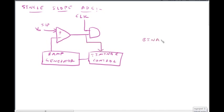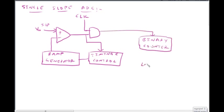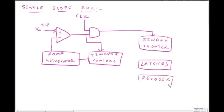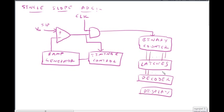Binary Counter. The Binary Counter input receives the clock. Latches output goes to the Digital Display. Decoder, decoder — the digital output is sent to the display. The latches input connects to the digital display output.